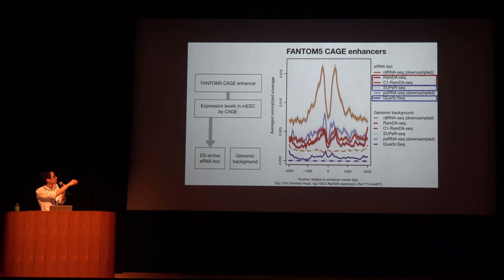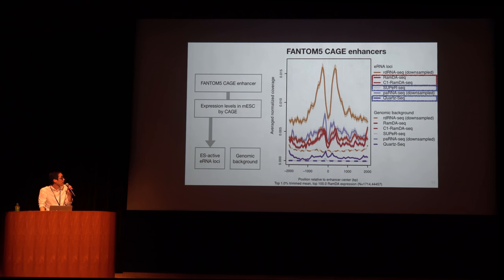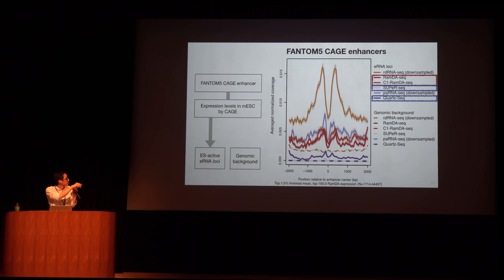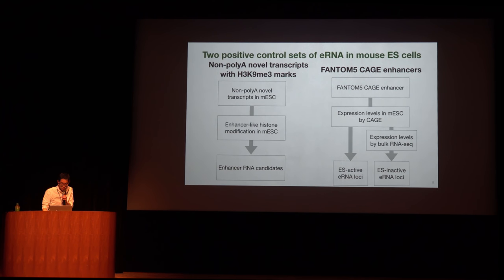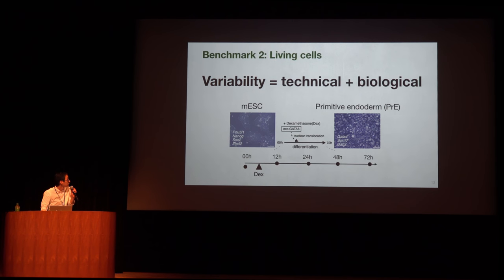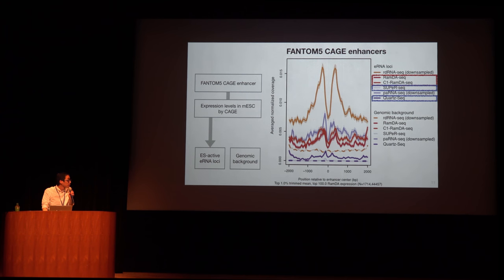As a positive control, orange lines represent bulk ribosomal RNA-depleted RNA-seq data, which shows clear bimodal peaks. RamDA-seq, shown in red lines, although small, also showed clear bimodal peaks. The other conventional single-cell RNA-seq methods, shown in light and dark purple, have no or very weak patterns. These results, using diluted RNAs, confirmed RamDA-seq can be used to detect eRNAs in single cells.